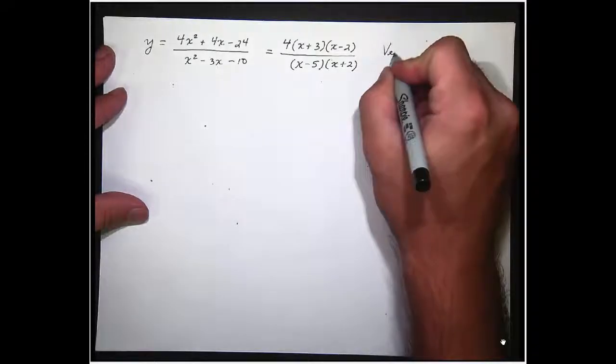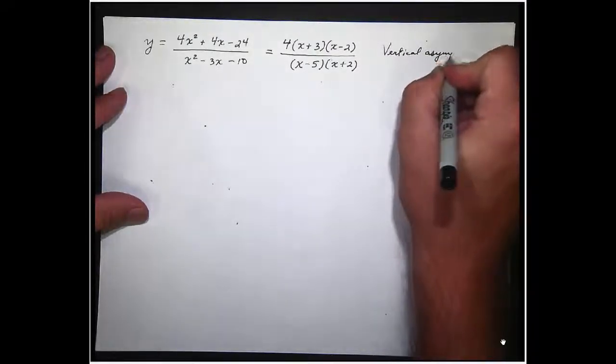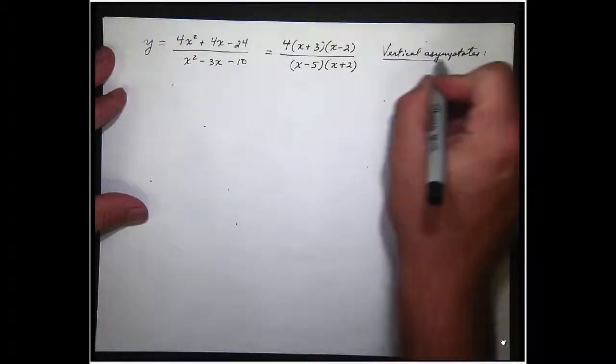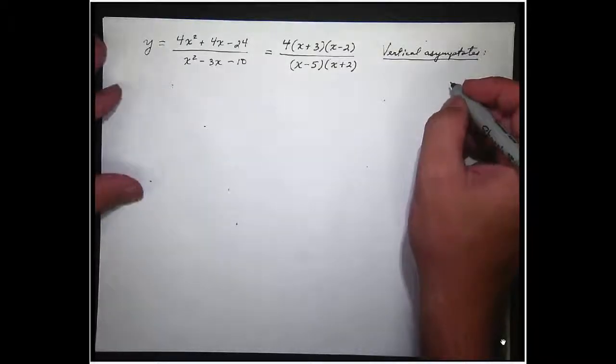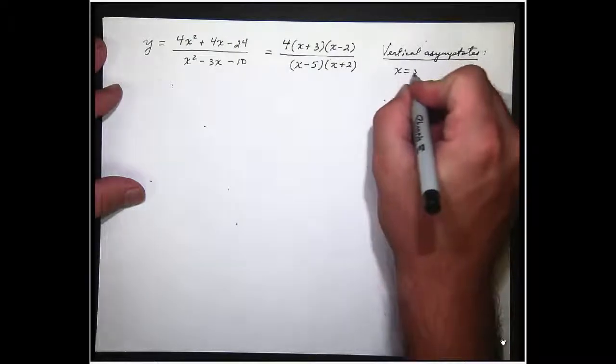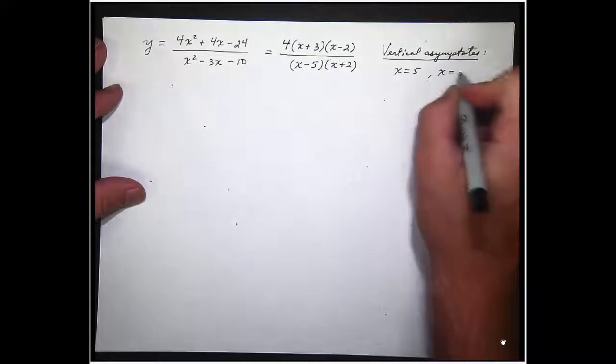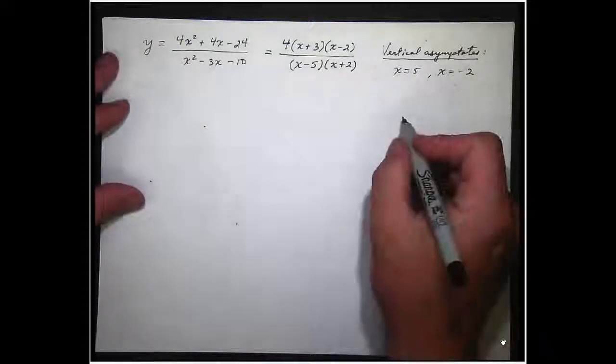So vertical asymptotes. I always say asymptotes but it's asymptotes. They're found at the zeros of the denominator. And the zero of this denominator is 5. The zero of this factor is negative 2. So those are the zeros of the denominator. Those are the vertical asymptotes.